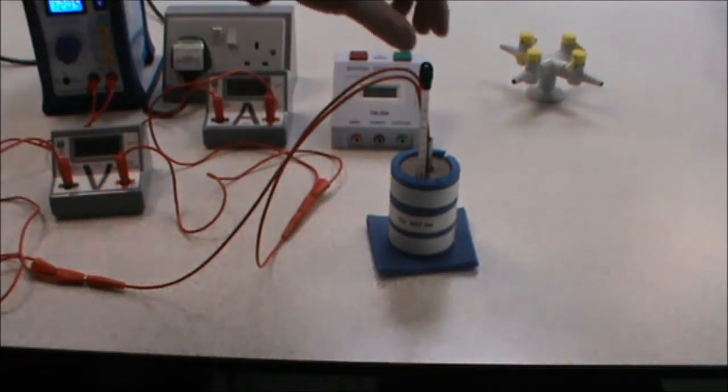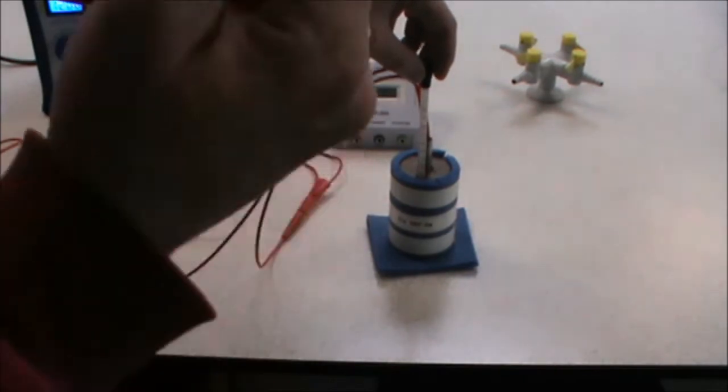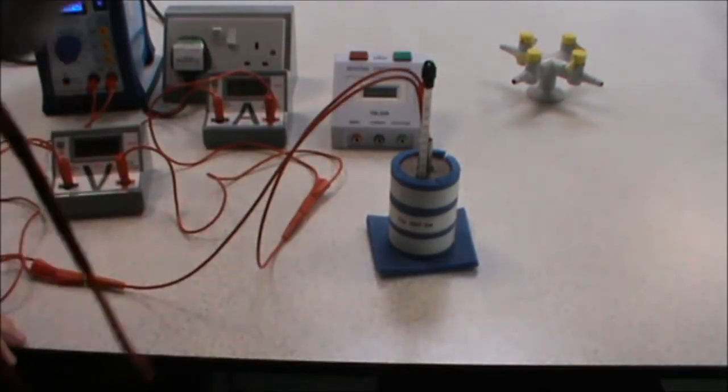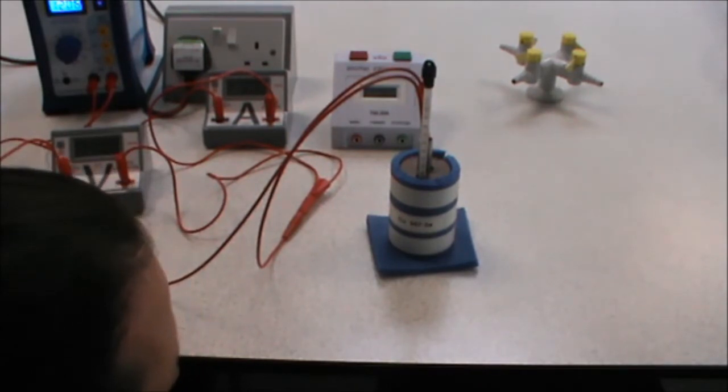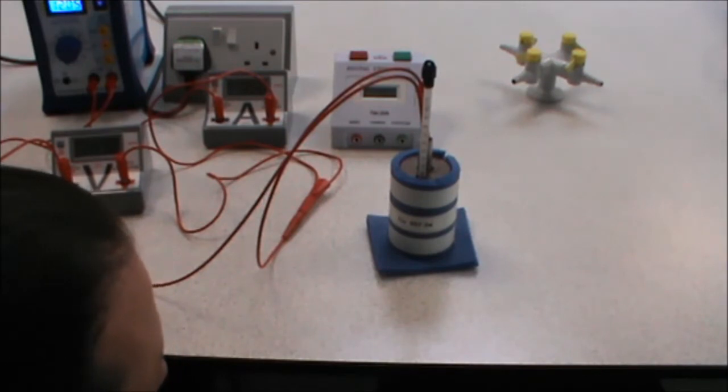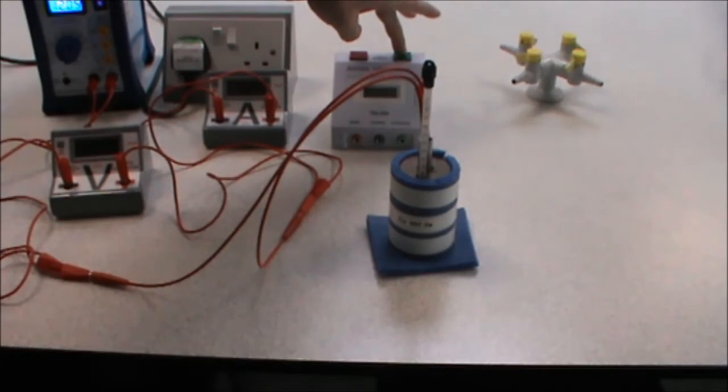We then measure the starting temperature of the block. To do this, you need to get your eye level with the block and make sure you don't have any parallax error. Reading the temperature of the block, our starting temperature for this experiment is 20 degrees. We now start the stop clock.